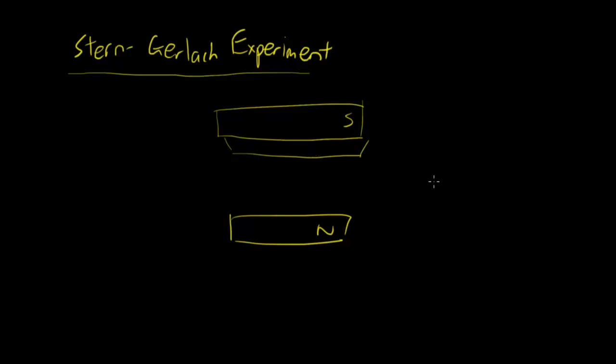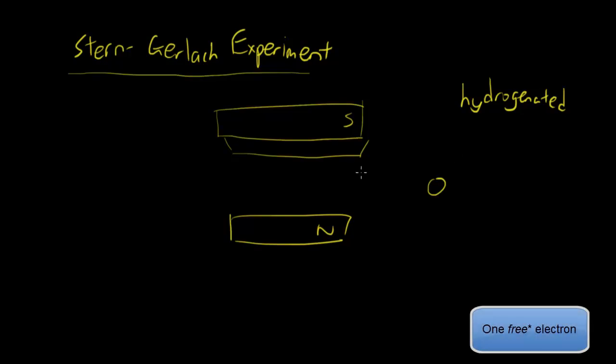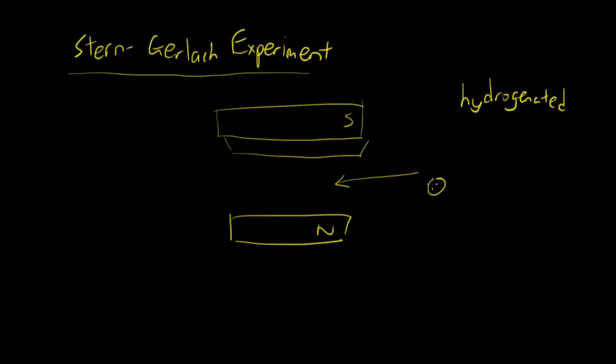What Stern-Gerlach did was they fired silver atoms, and why silver? Because they were what are known as a hydrogenated atom, and because they have a valence shell with only one electron. They fired the silver atom through, and what they thought was that, due to the electrons, there must be some sort of magnetic field in this silver atom. Depending on the orientation of the electron's spin, the atom would get deflected into different areas. It could be deflected up here, down here, or down here. This is what was expected.